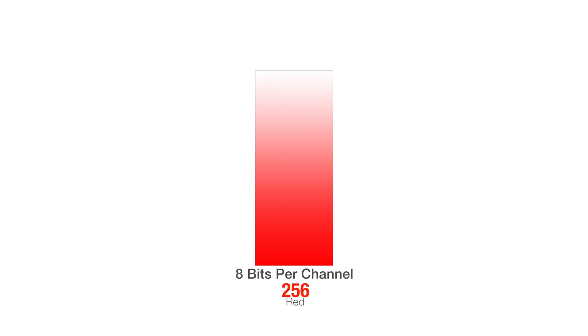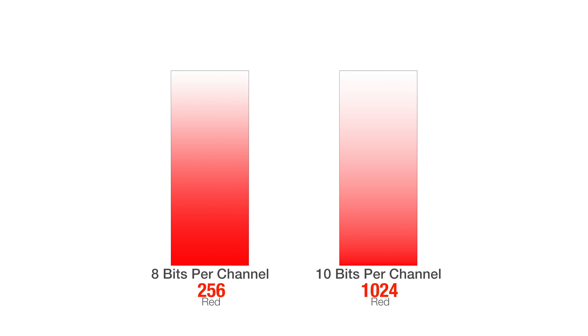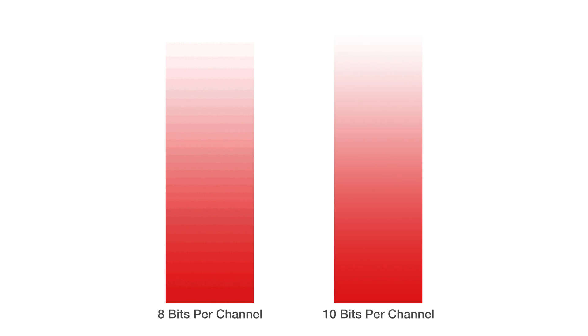I've spoken about dynamic range in a previous video, and it directly relates to color depth. If we have higher bit depth — more color bits — then we technically have more shades of RGB colors within each color channel. To put it into perspective, an 8-bit frame of video will have 256 different luminosity shades of red, whereas a 10-bit frame of video will have 1024 different shades of red. So the 10-bit image will definitely have more dynamic range.